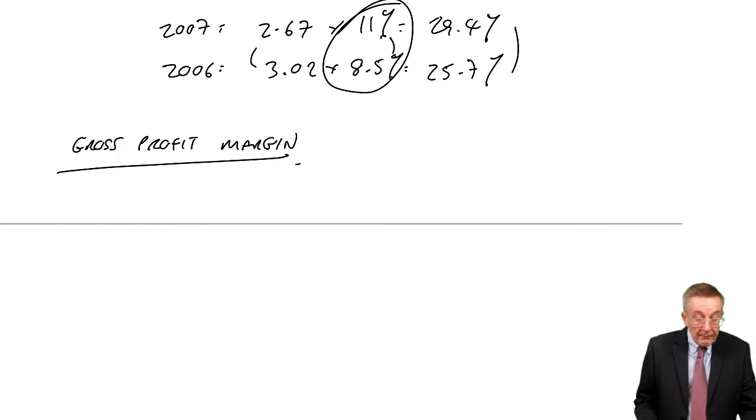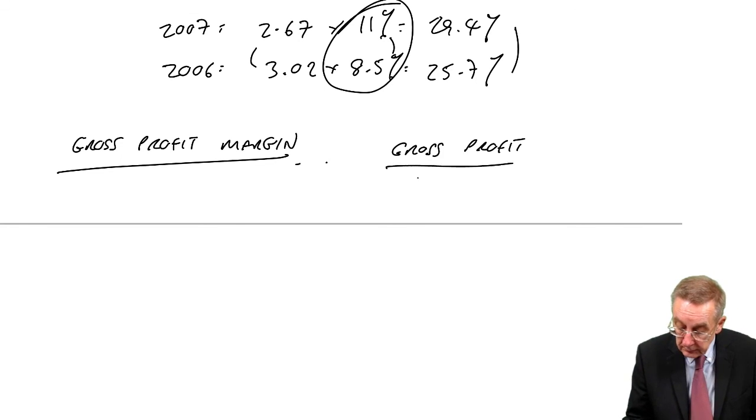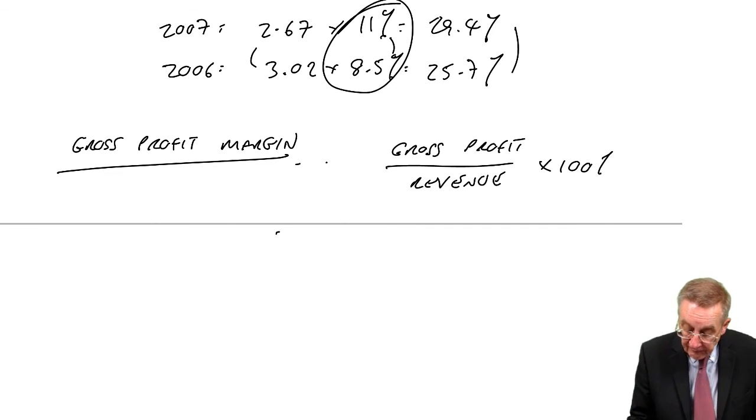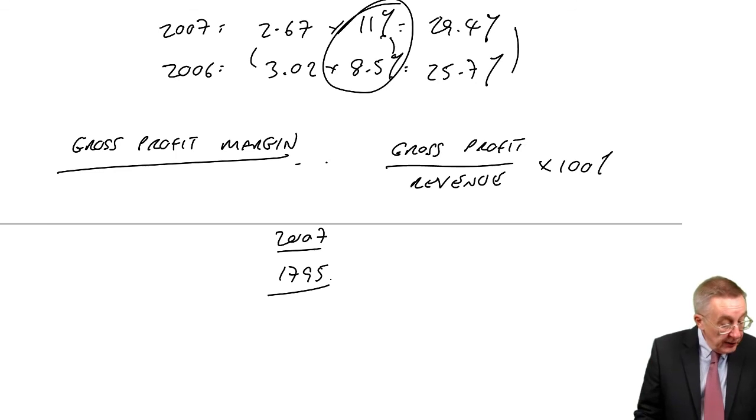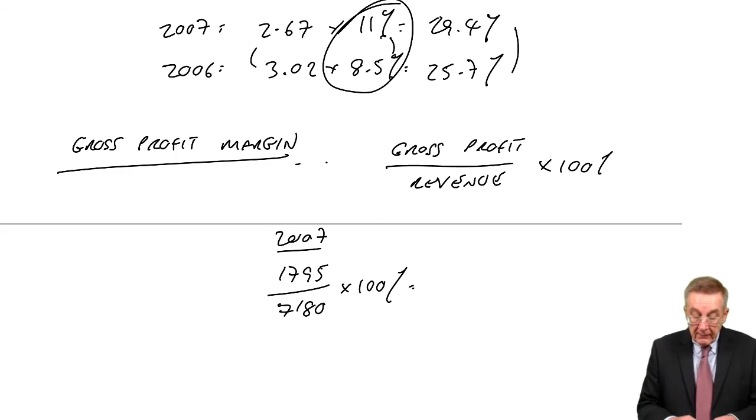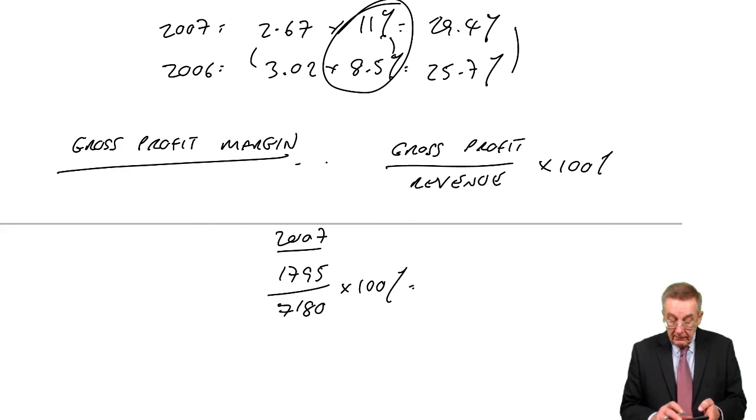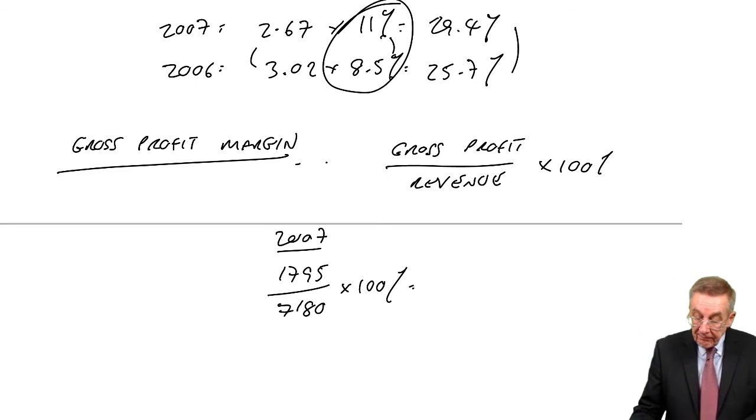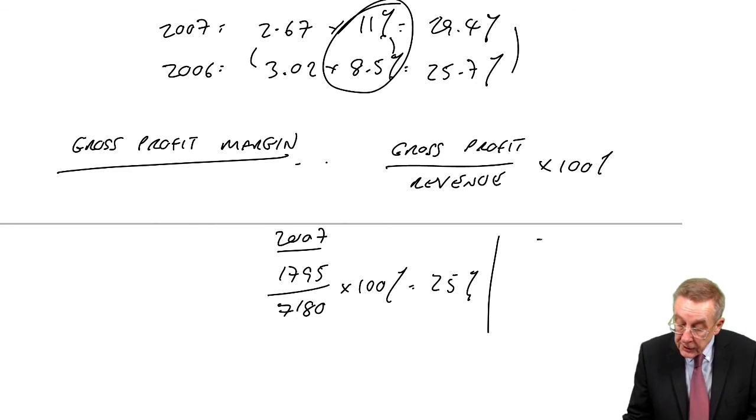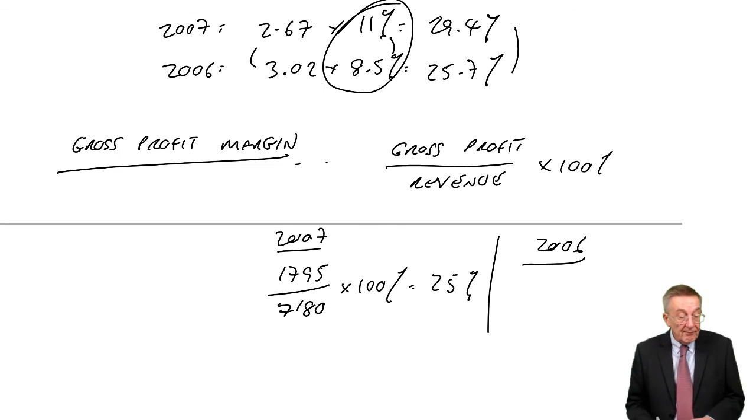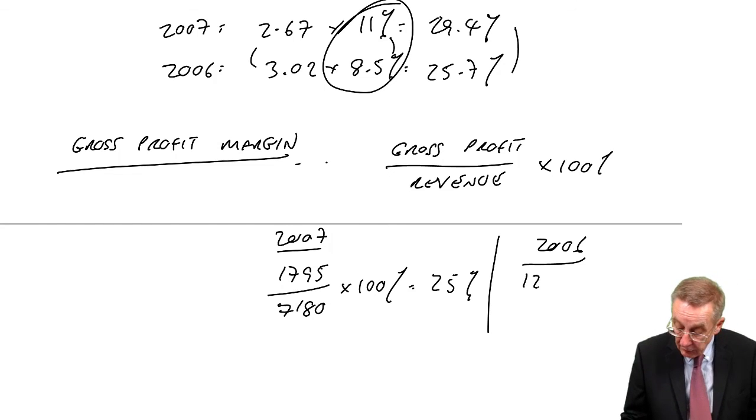The gross profit margin - we take the gross profit as a percent of revenue. And so in 2007, the gross profit 1795, the revenue 7180. In 2006, the gross profit was 1223, the revenue 5435.